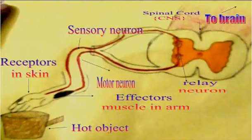Hi friends, this is Shivang here and today I'm going to throw some light on the topic reflex action. Reflex action is the simplest form of response in the nervous system. It is a rapid automatic response without thinking or any thought, like pulling our hand away on pricking a pin, or unknowingly touching a hot object.